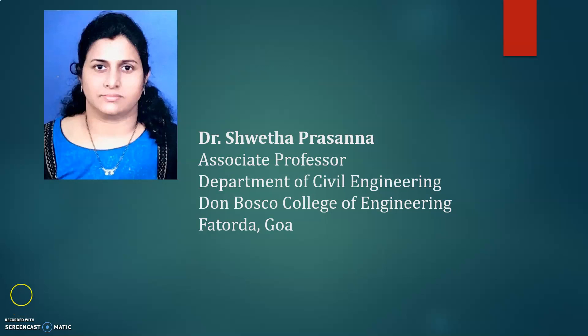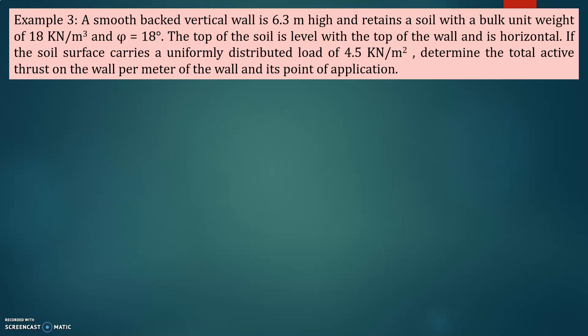Hello dear students, let us take one more example on active and passive earth pressure. A smooth backed vertical wall is 6.3 meters high and retains a soil with a bulk unit weight of 18 kilonewton per meter cube and phi equal to 18 degrees. The top of the soil is level with the top of the wall and is horizontal. If the soil surface carries a uniformly distributed load of 4.5 kilonewton per meter square, determine the total active thrust on the wall per meter of the wall and its point of application.